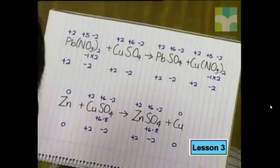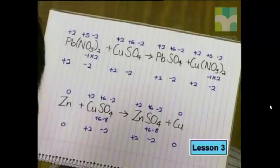A charge can't be created or destroyed, so where did the copper obtain these electrons? The only possible source is one of the other reactants. The source from which the electrons are obtained is called the reducing agent. Oxidation numbers tell us when there is a change in the arrangement of electrons, and the only other substance where the oxidation number changed was zinc.